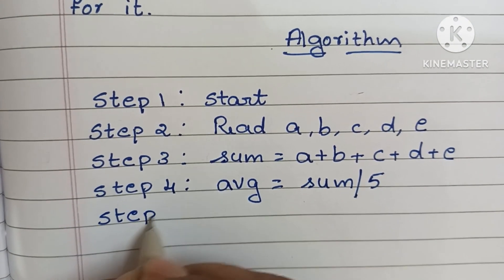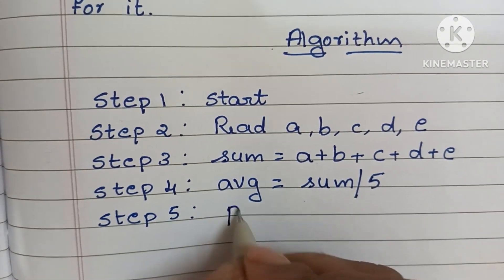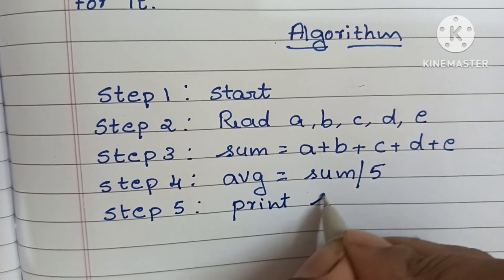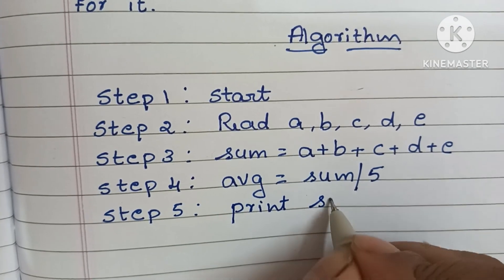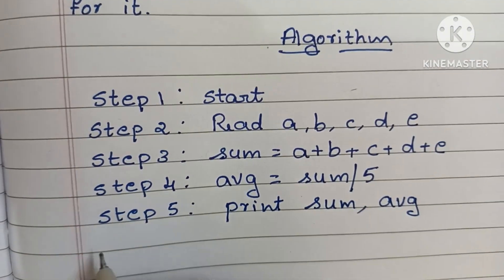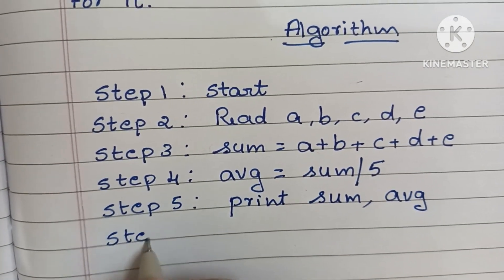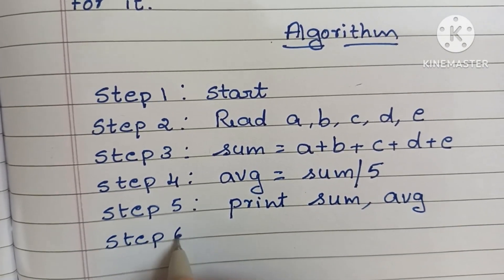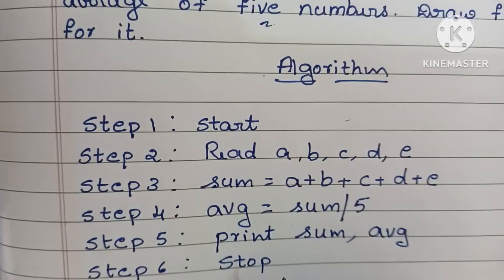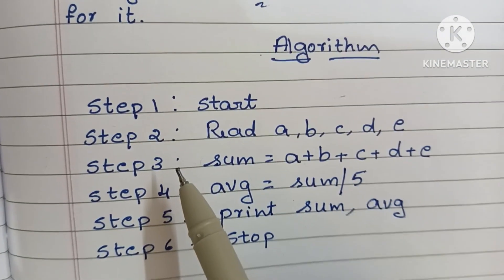In step five, we have to print the sum and average of five numbers — the output values, that is sum and average. In step six, we have to stop the algorithm using the stop statement. So this is the algorithm to find sum and average of five numbers.